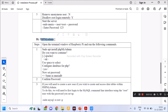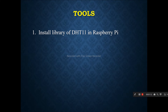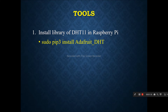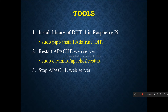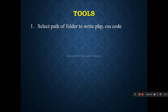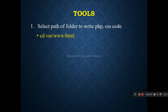We have installed a number of tools including phpMyAdmin. We have to install a few more libraries. Since we are using DHT11 with Raspberry Pi, we have to install the corresponding library using a specific command in the terminal window of Raspberry Pi. To turn on the Apache web server, we use a command in the terminal window. We can stop the web server using another command. When Raspberry Pi is acting as a web server, we have to store our files in a particular location.